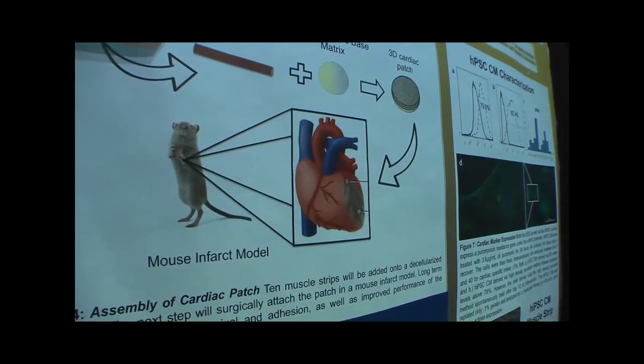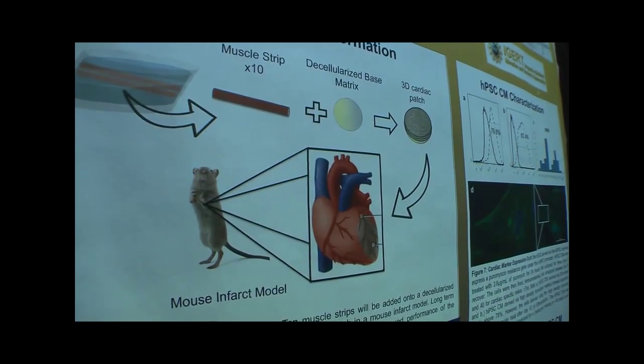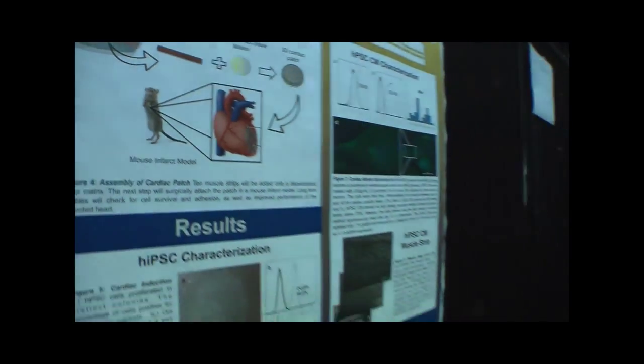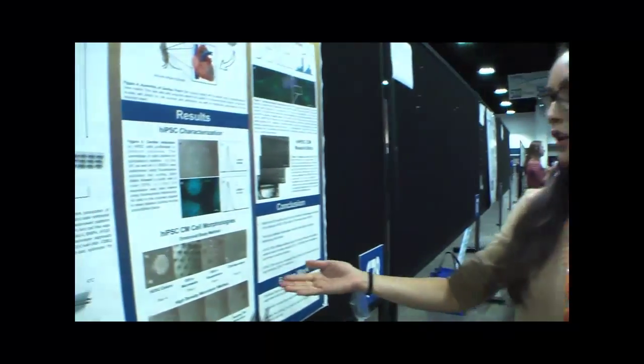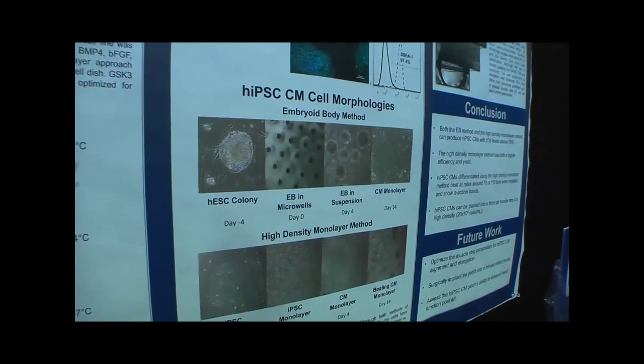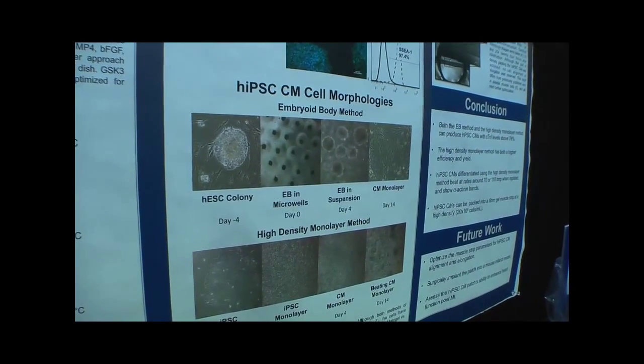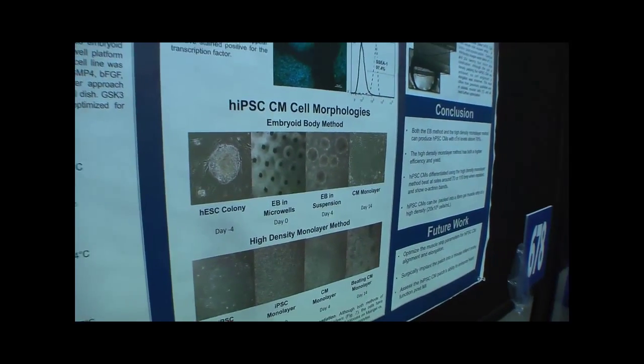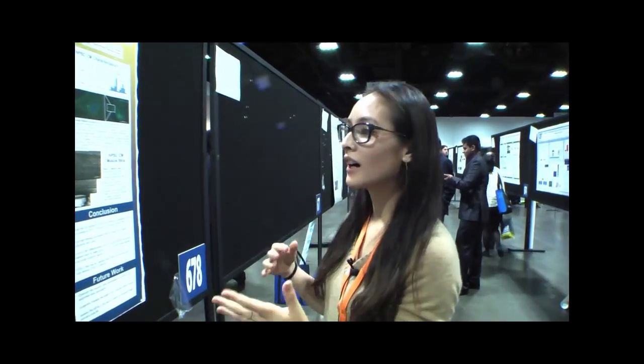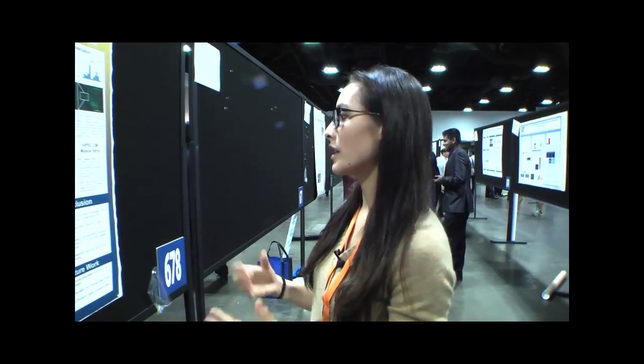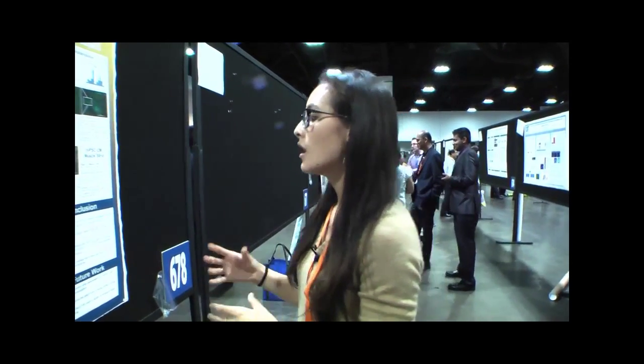So far I've tried these two different methods for deriving cardiomyocytes. They have drastically different morphologies when they're being differentiated and in their final cardiomyocyte cell fate. Although both can have a final cardiac troponin I expression of 80 to 90%, the Wnt inhibition protocol produced many more cardiomyocytes, so this is the one I went with to make the muscle strip.